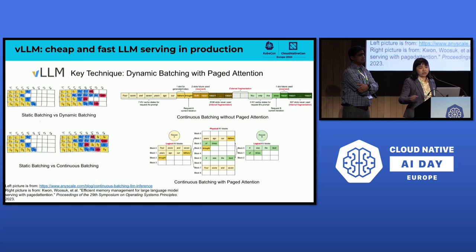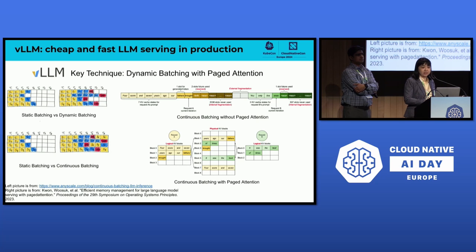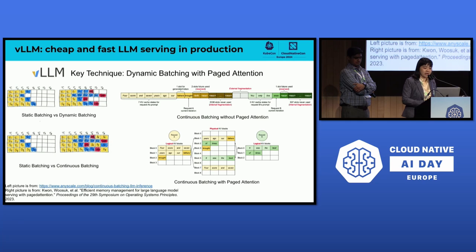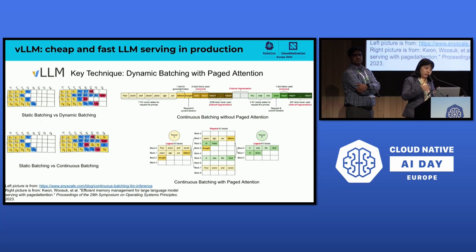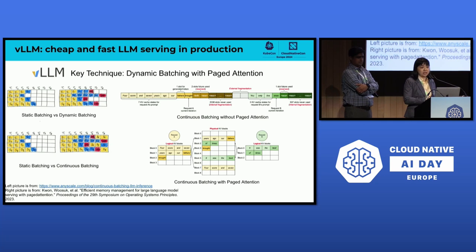That's why in production use cases we really want to have some techniques to improve the throughput and performance of inference. There are two popular techniques in the open source and wider academia community. One is called continuous batching, which is derived from static batching — utilizing more memory to batch more requests and use the GPU more efficiently. Continuous batching continuously understands how many requests are coming in and utilizes memory better, concatenating requests to maximize memory and GPU utilization.